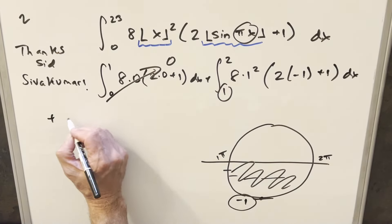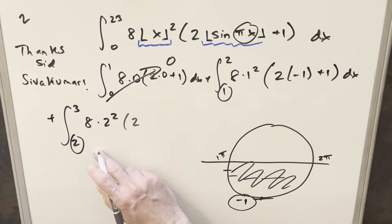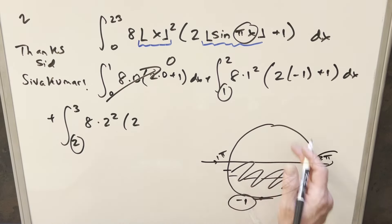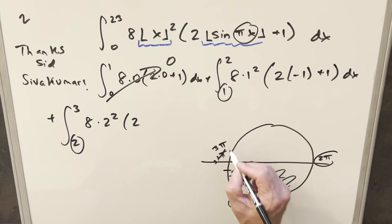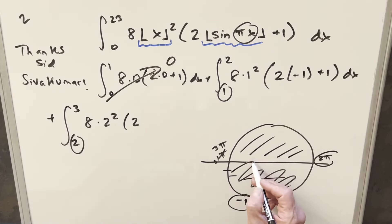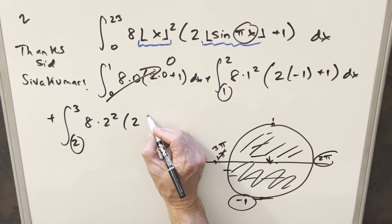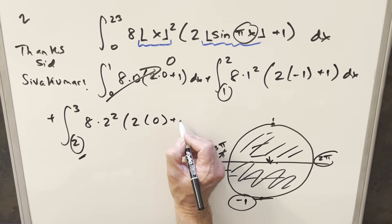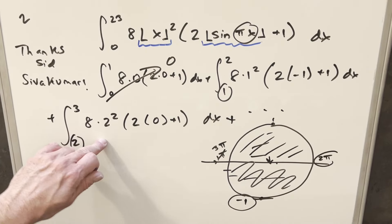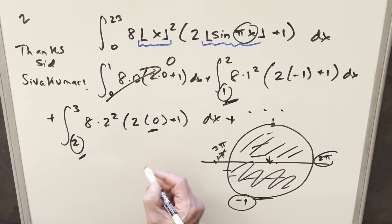For the integral from 2 to 3, the floor of x gives 2 squared. The input πx ranges from 2π to 3π — quadrants 1 and 2 — so sine is between 0 and 1, and the floor rounds down to 0. This pattern repeats: when the lower bound N is odd, the floor of sine gives -1; when N is even, it gives 0. So the exponent alternates accordingly all the way to the last integral from 22 to 23.